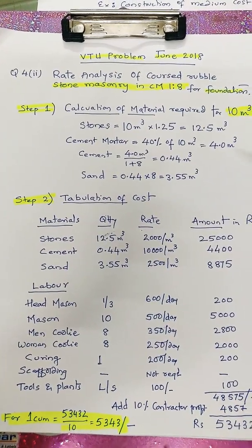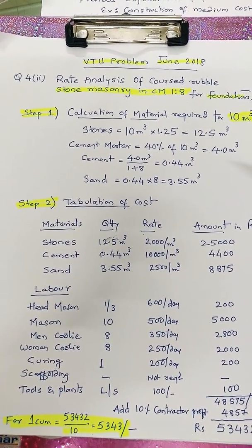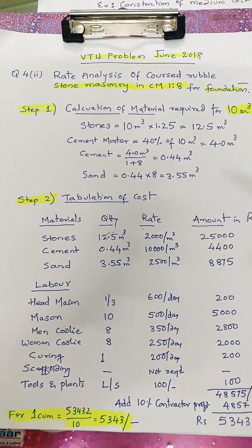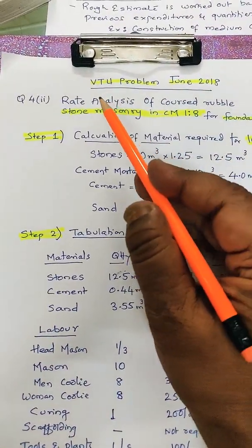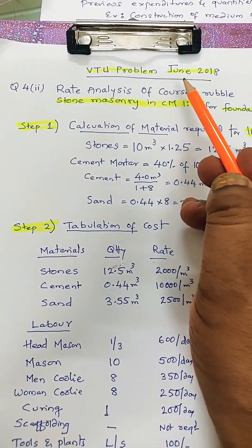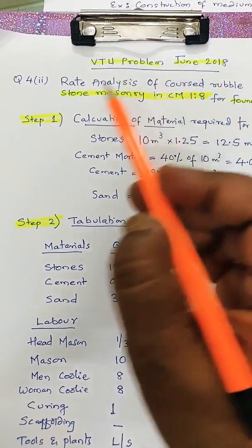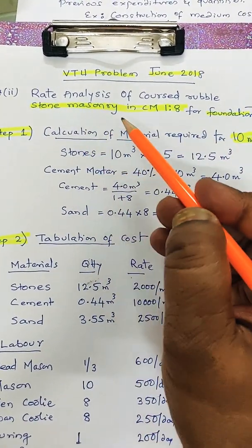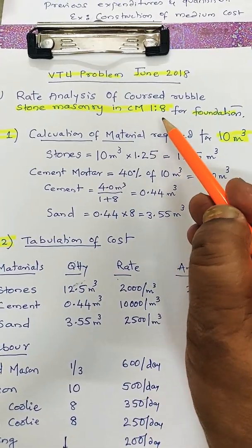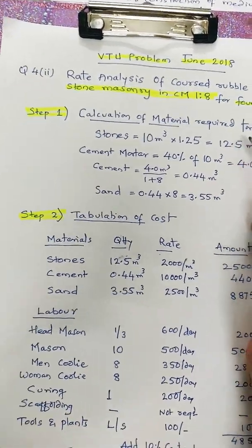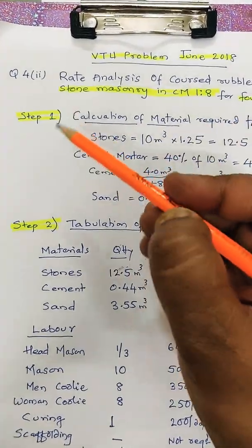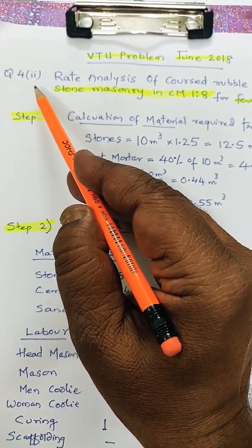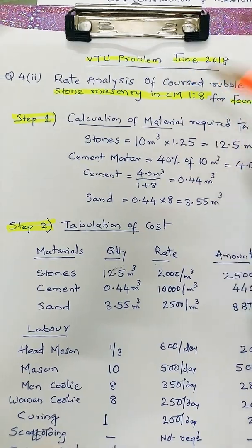Dear students, this is Basav Raj Mali, associate professor at Shrek College of Engineering and Technology, Balagami. Today I am going to solve a video problem of June 2018 on rate analysis of coarse rubble stone masonry in CM 1:2 for foundation. This is available in question number 42 of the BTO problem.